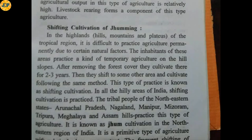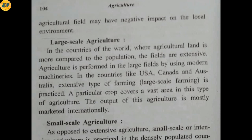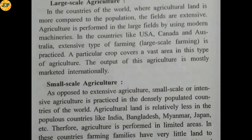It is known as Jhum cultivation in the northeastern region of India. It is a primitive type of agriculture with relatively less crop output. The frequent shifting of agricultural fields may have a negative impact on the local environment, as forest clearing and burning causes environmental damage.